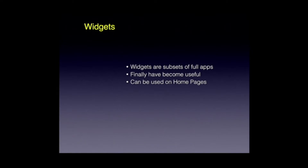So what are widgets and why do we want to talk about those? They've been around a while but haven't been horribly useful because they were isolated to a single page and you really couldn't do a lot with them. However, widgets have finally come of age — they are a subset of a full app and there are a lot of them. One app called Carrot Weather has over 30 different settings for different kinds of widgets. They've become useful in that you can now put them on your home pages, customizing your iPhone to make it more personal.